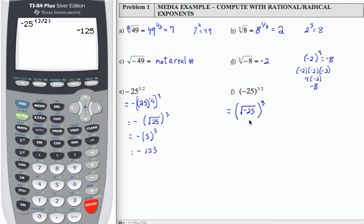So therefore, I can't do the inside part, meaning I can't raise any result to the 3rd. So this result will be not a real number, similar to what we had up here in Part C.